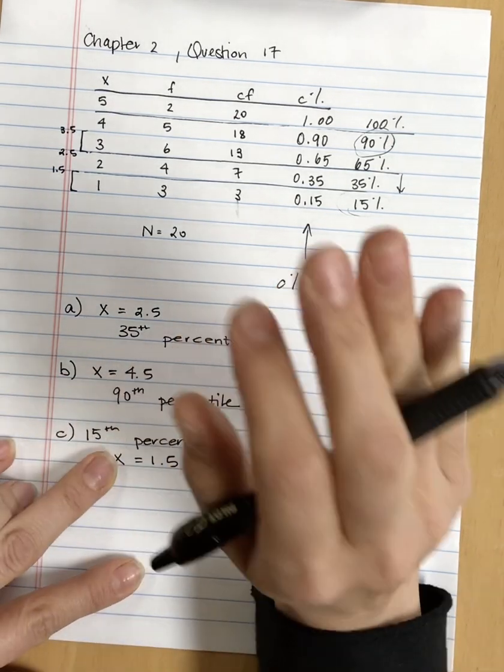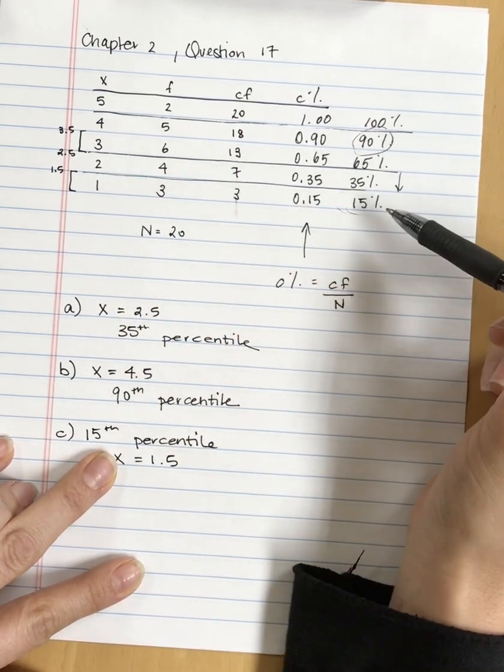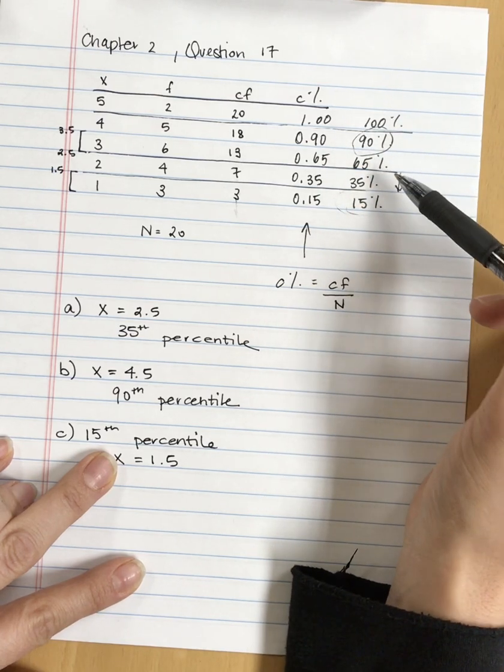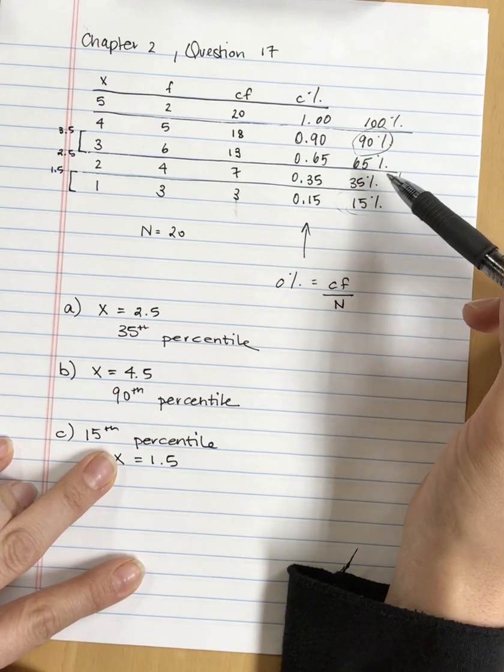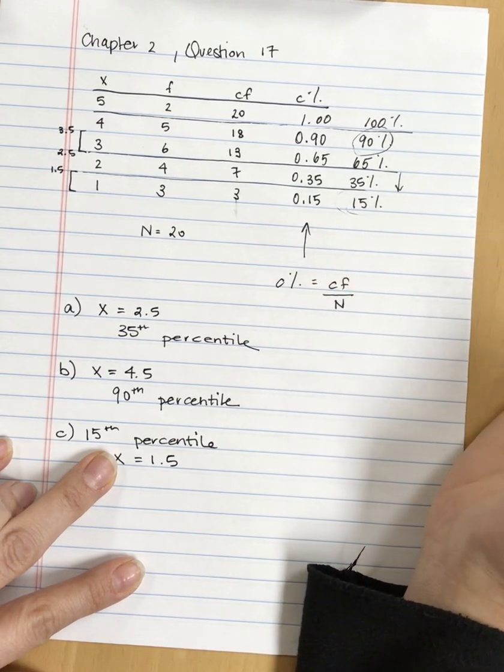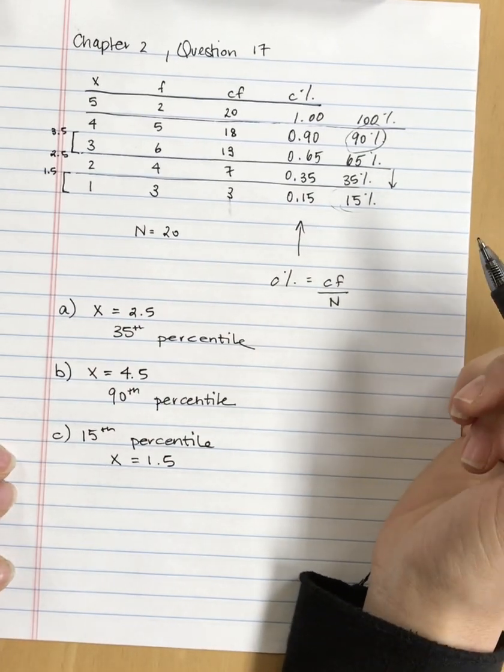But technically, we can find the x-score that is associated with any percentile, even if that percentile is not listed here. It is a bit trickier because you have to use the process of interpolation, and so I will have videos on that coming up.